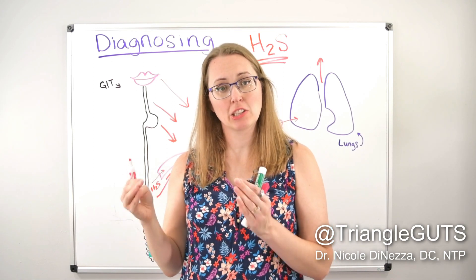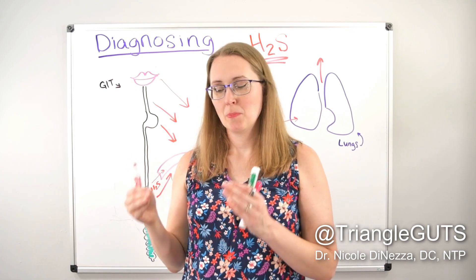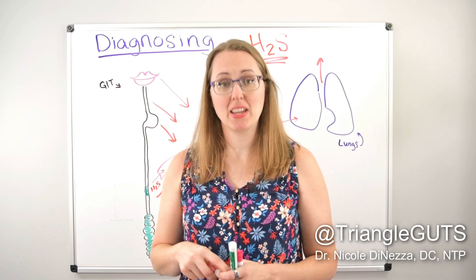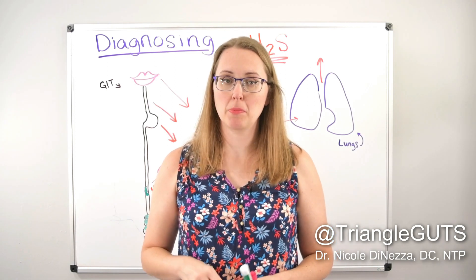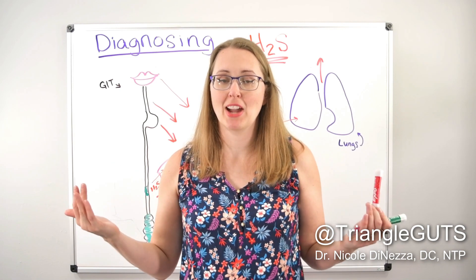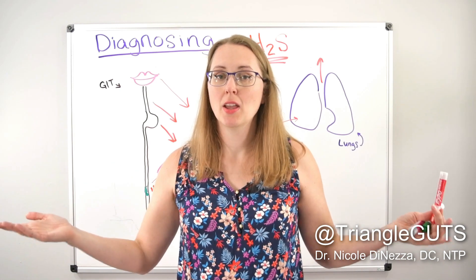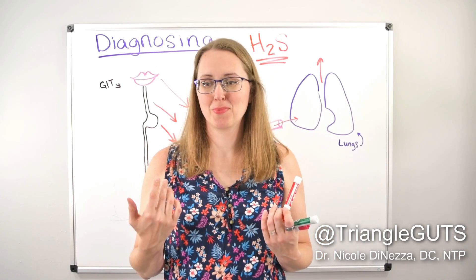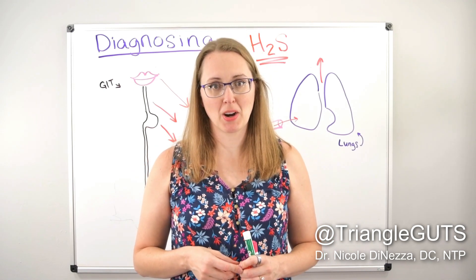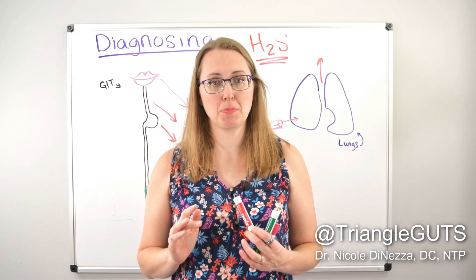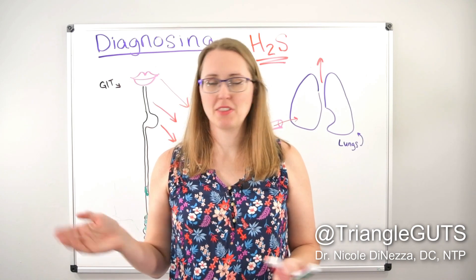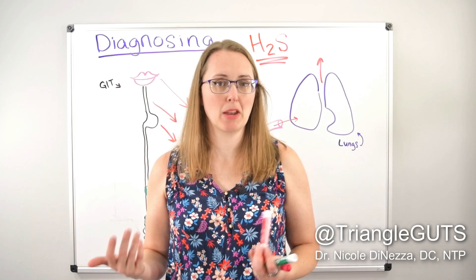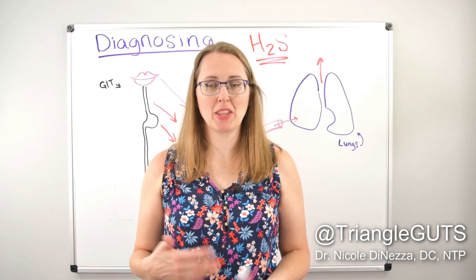We can say it's hydrogen sulfide overgrowth or hydrogen sulfide dysbiosis, but we cannot call it hydrogen sulfide SIBO. If you're looking for that granular a diagnosis, you've got to go with a change in hydrogen sulfide production from baseline. If you start out with an elevated baseline, you can deduce hydrogen sulfide production, but you don't know where it's from. That's my biggest beef with the Trio Smart test. It's a great test - I just think it's being misused about 95% of the time, partly because of what Dr. Pimentel himself has said.